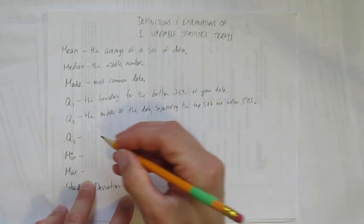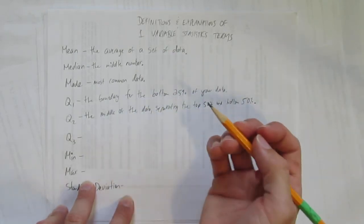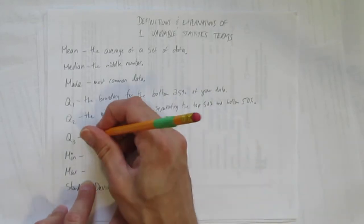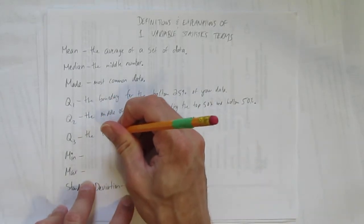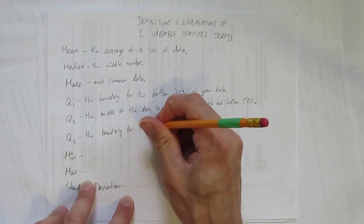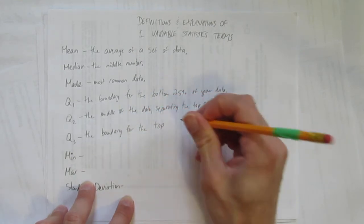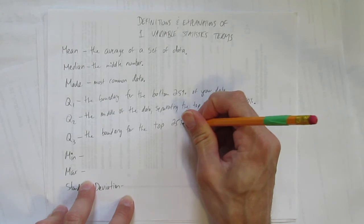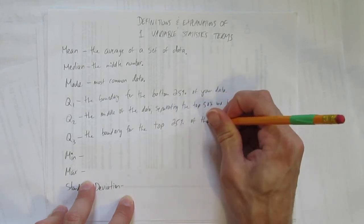What's Q3? Just like Q1, it separates a quarter, but in this case, it's the boundary for the top quarter. We'll write the boundary for the top 25% of the data.